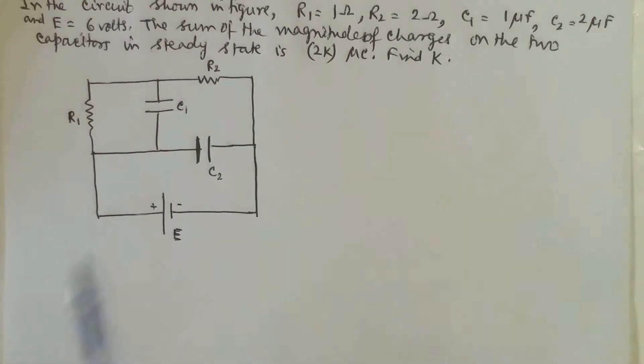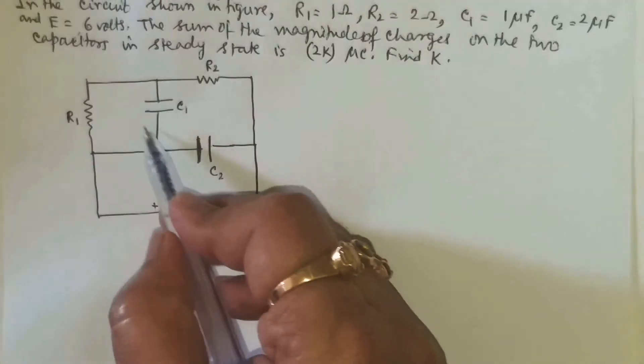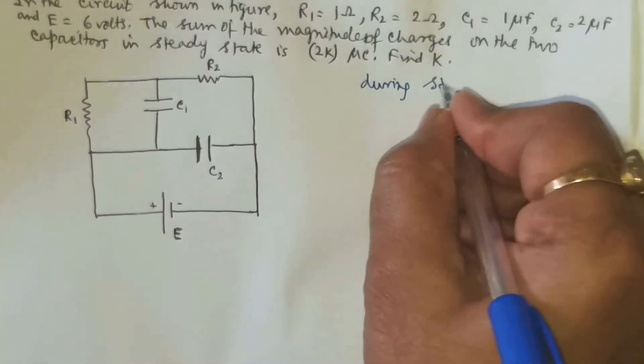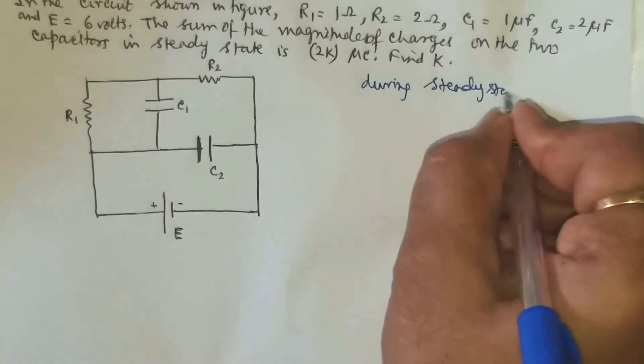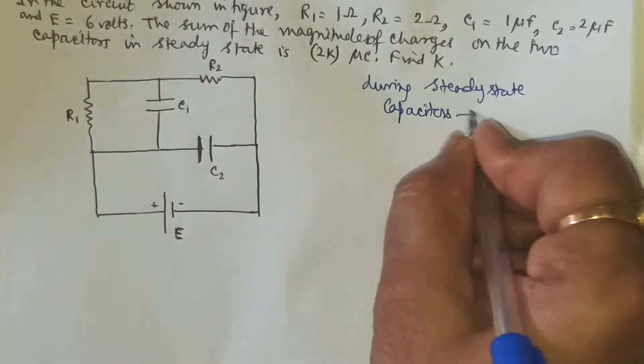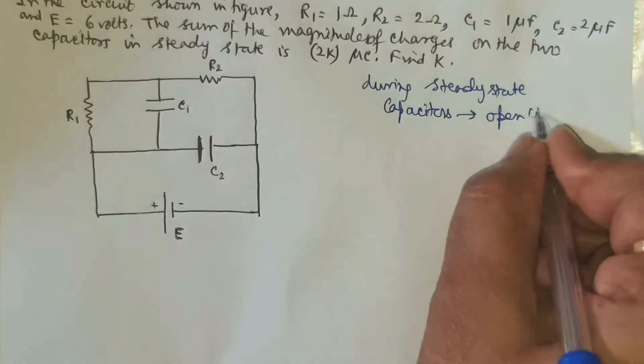In the steady state condition, when capacitors are completely charged, these two capacitors act as open circuit. So during steady state the capacitors act as open circuit.